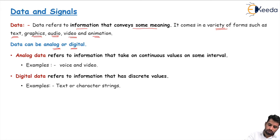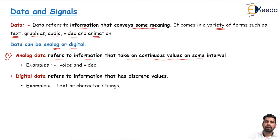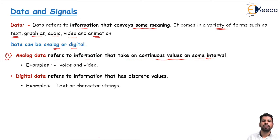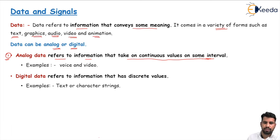Analog data refers to information that takes on continuous values on some intervals. Continuous values means when you are creating data, that data is making continuous values. Examples of analog data include your voice or videos — data collected from the real world using some type of data collection device.